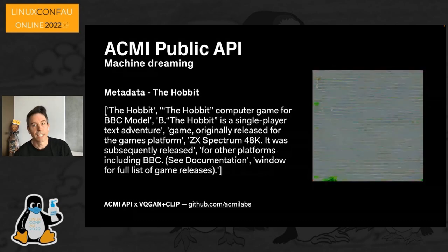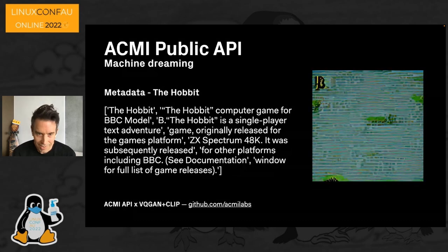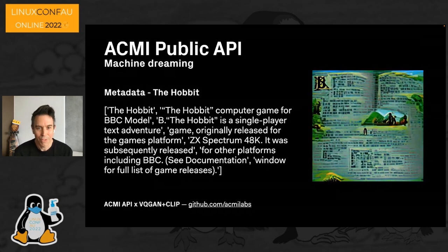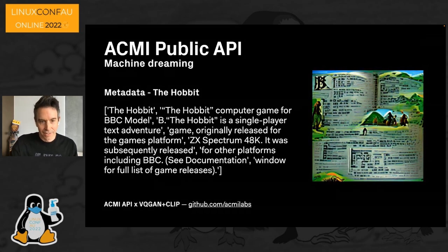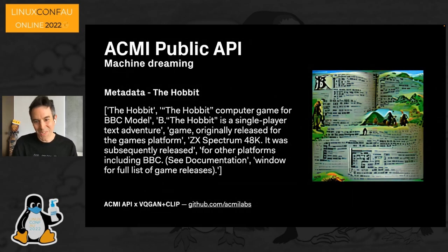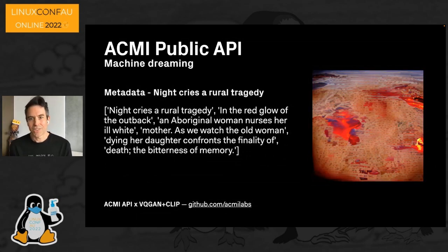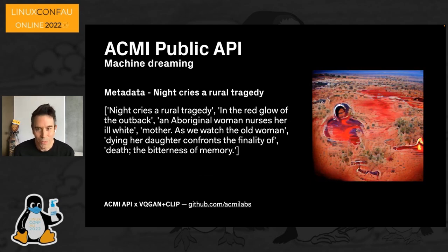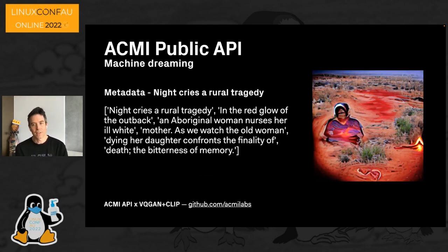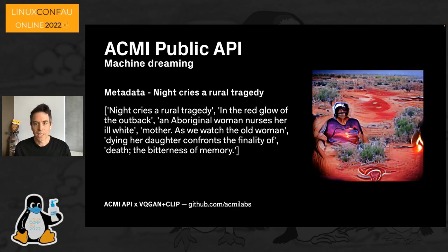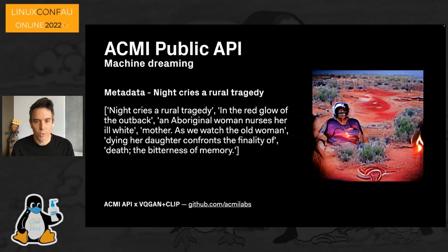Feeding it the video game of The Hobbit, the training data clearly had an image of the book, so it conjured up the book rather than a video game — not surprising given it's a Spectrum game. The training set also appears to know that outback Australia is Aboriginal land, which is very nice. If you'd like to try some others, our notebooks run for free on Google Colab servers, with links in our ACMI GitLab from the blog post, API documentation, and in these slides.